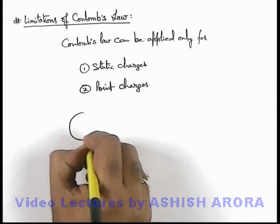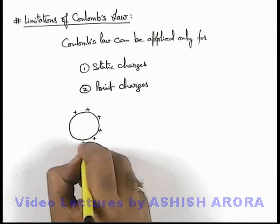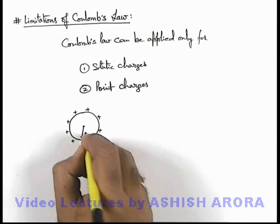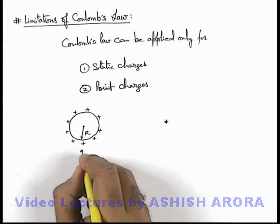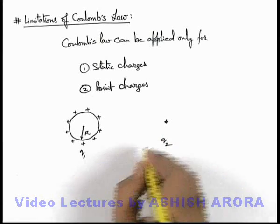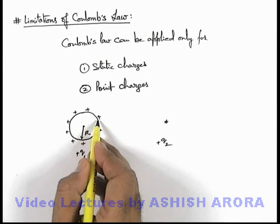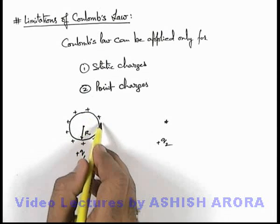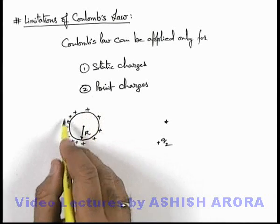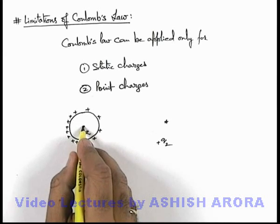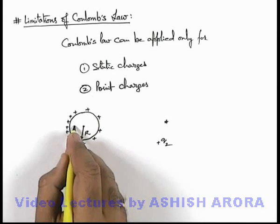A simple example: if we are given a metal sphere which has a uniformly distributed charge on it, and if it is isolated everywhere its radius is the same, so its charge density will also be the same. Now if we place another point charge close by — say this is charge q1 and this is charge q2 — then if both are positive charges, due to the presence of q2, it will attract the free electrons of the metal body toward it. On the right side the charge density will decrease and on the left side it will increase. So earlier, when the charge was uniformly distributed, we could have considered the overall charge concentrated at its center, but now it has shifted, so the so-called center of charge will shift slightly to the left.